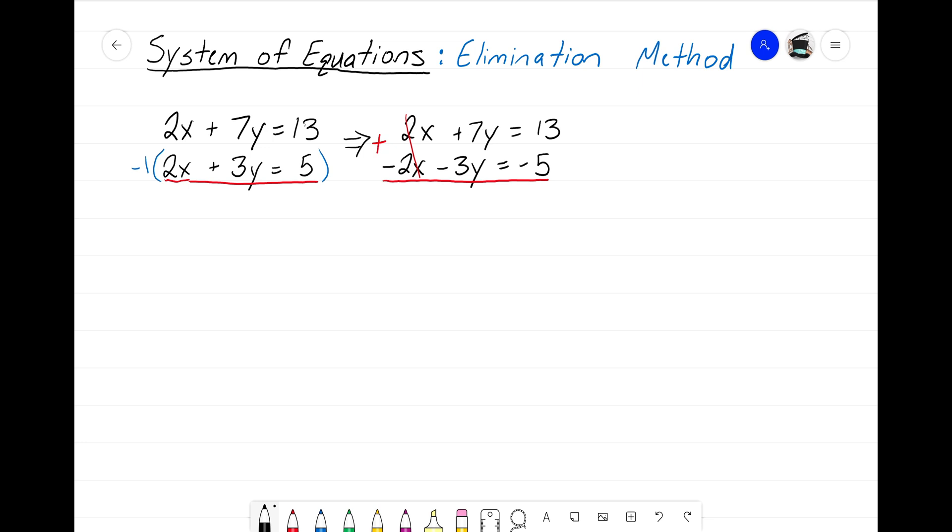Now look, I have seven y's plus negative three y's. So 7 plus negative 3, that would become a 4y, equals 13 plus negative 5. Well, 13 take away 5 will just become an 8. So now you see I have a single equation where I have one variable. My x is dropped out. Now I can solve for this equation. So let's go ahead and do that.